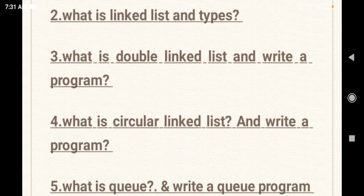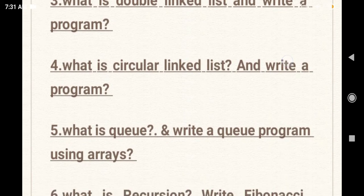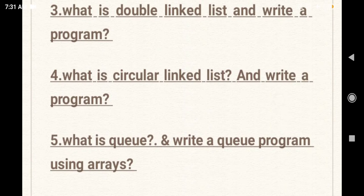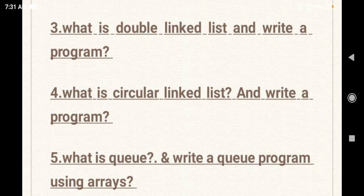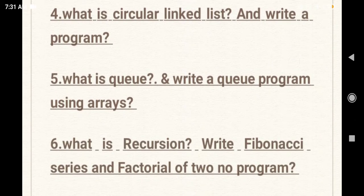Third question: What is a double linked list? Write a program. Double linked list has two types — write the program. Next: What is a circular linked list? Circular linked list is in the form of a circle — write a program using array. Also, Queue — FIFO: First In First Out. Queue example: people standing in a queue.